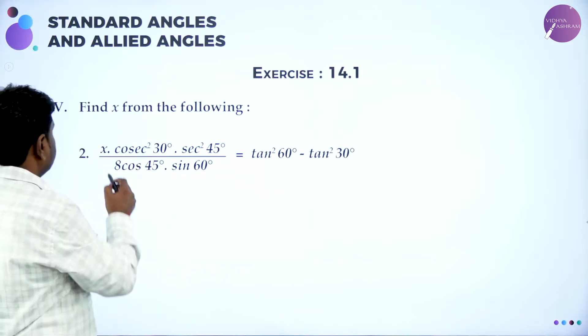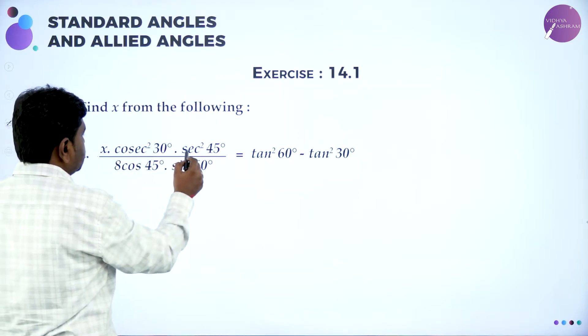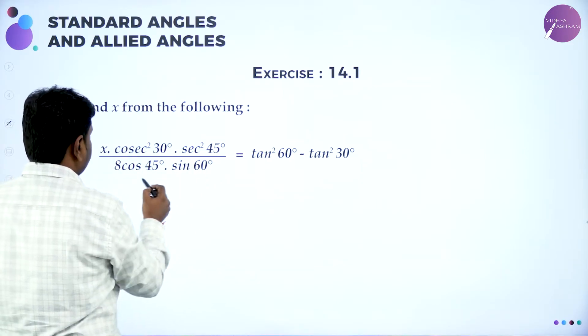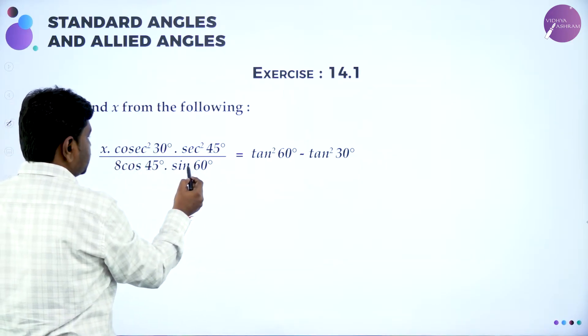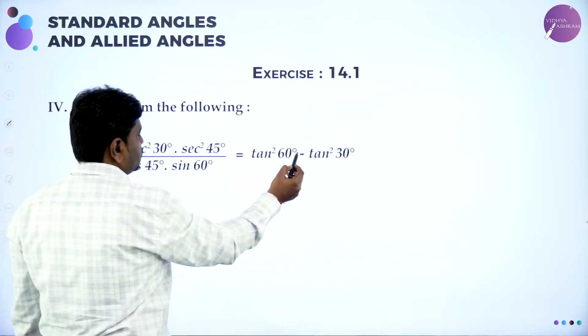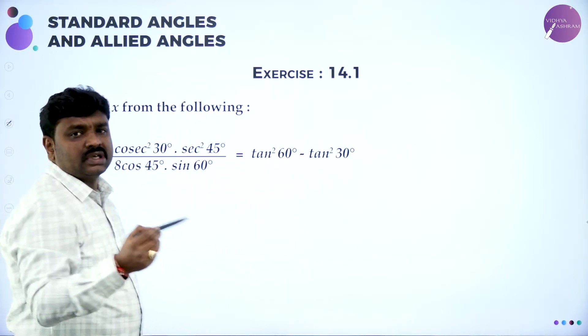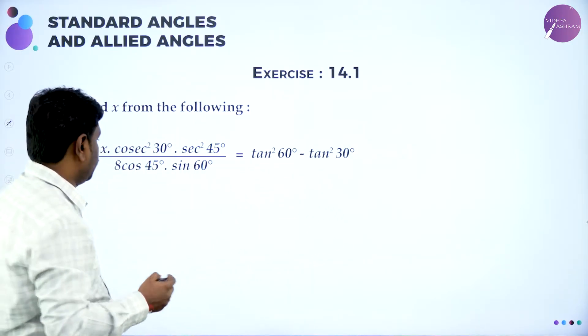Further: x · cosec² 30 · sec² 45 divided by 8 cos 45 · sin 60 equals tan² 60 minus tan² 30. Substitute the values.